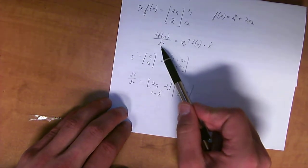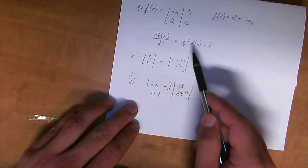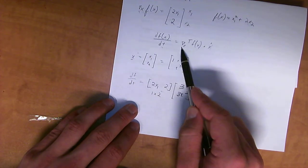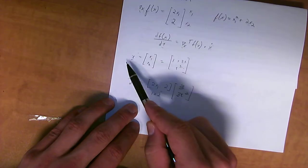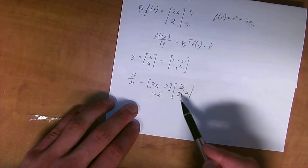Then you take the gradient of the function, transpose, times the derivative of x. And x is given separately. And x is given in terms of t. So, derivative with respect to t of that function.